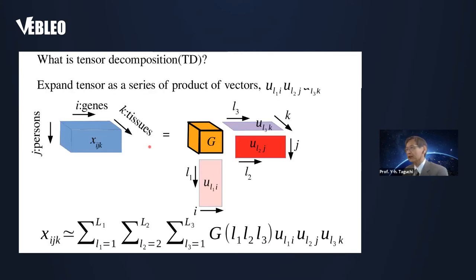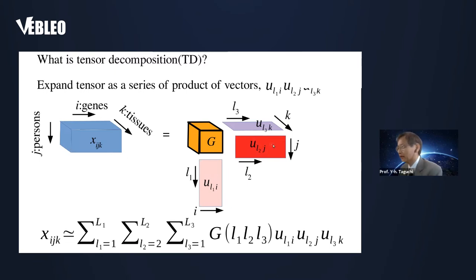I would like to explain what tensor decomposition is. Tensor decomposition is the expansion of a tensor as a product of vectors. The first vector ul1(i) represents the dependence upon genes i. Similarly, there is a vector representing dependence upon persons j — ul2(j) — capturing different kinds of dependence upon persons. And similarly, we have many kinds of dependence upon tissues k, with the tensor expanded as a weighted product of these vectors with weight g.